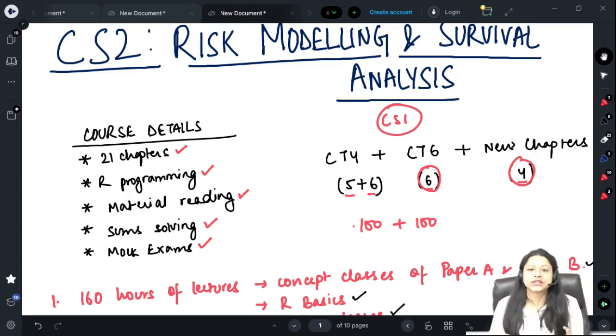CT6 is mostly full statistical, wherein we have time series, which is again very interesting. We learn how to project and forecast and predict a single dimensional data. And we'll be learning loss distribution, reinsurance, which are comparatively easier and interesting topics. All the new chapters which have been added in the syllabus are again very interesting and have a good real life application.